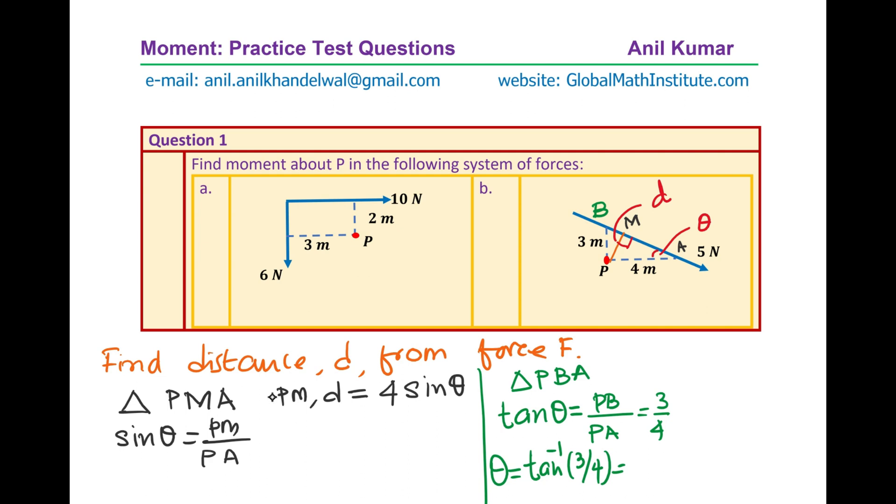Is that clear to you? So from here we can get the value of theta. So I am using the calculator to find this particular answer. Tan inverse of 3 divided by 4, I am converting that to degrees now, and then we do shift tan inverse of 3 divided by 4.